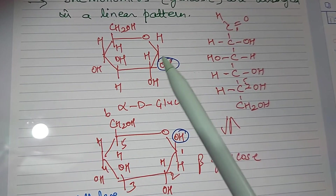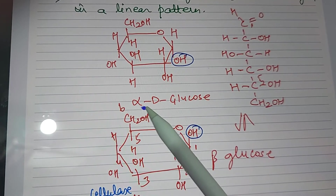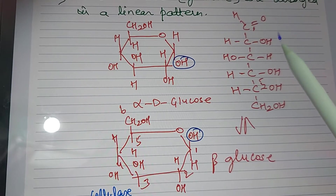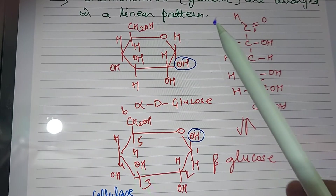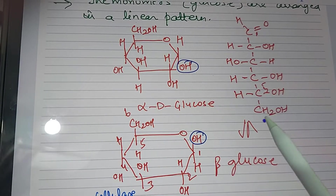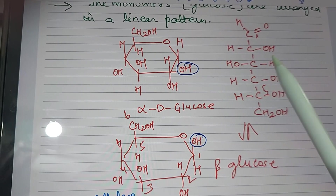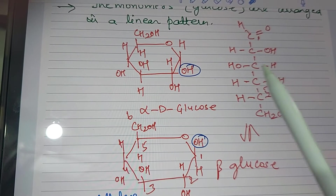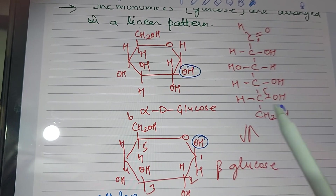Before starting with disaccharides, let's discuss the differences between alpha-D-glucose and beta-D-glucose. This is the linear chain of the glucose molecule. Since it's an aldohexose, it has a CHO group — it's a six-carbon compound with the first carbon OH, second carbon OH, third carbon OH, fourth carbon OH, fifth carbon OH, and sixth carbon as CH2OH.